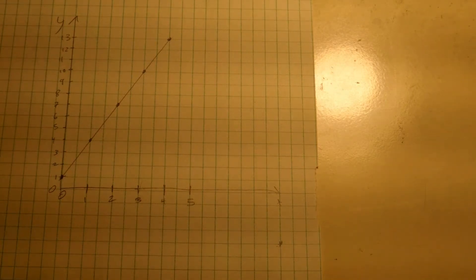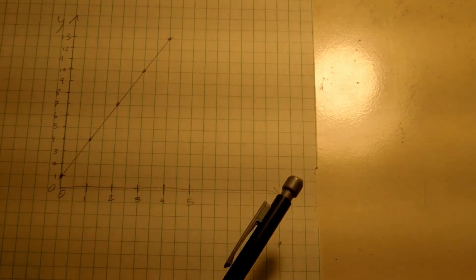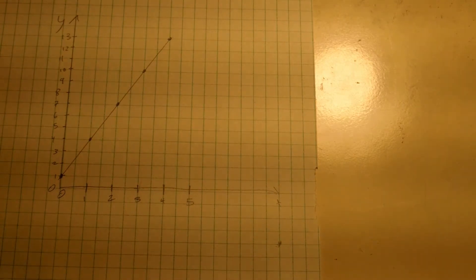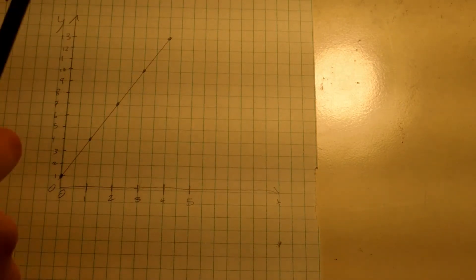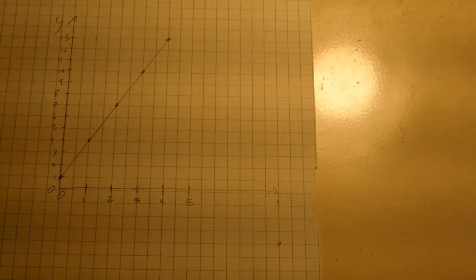Let's try with the graph. Again, I recommend starting with the y-intercept. On a graph, you have a line going to the right that represents the x numbers, and a line going up that represents the y numbers. The diagonal line is the equation that is being graphed and what we are trying to find information about.